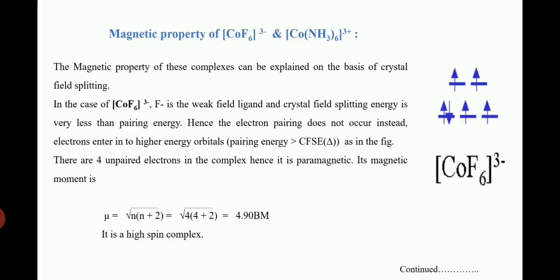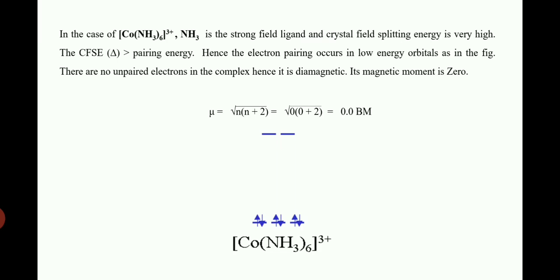In the complex CoF₆³⁻, fluorine is the weak field ligand and the crystal field splitting energy (CFSE) is very low compared to the pairing energy. Because of the weak field ligand, electron pairing does not occur; instead, electrons enter into higher energy orbitals, so pairing energy is greater than CFSE. In the second complex, the cobalt-amine complex, amine is a strong field ligand and CFSE is greater than pairing energy. Due to the strong field ligand, electrons become paired, so no unpaired electrons are found.